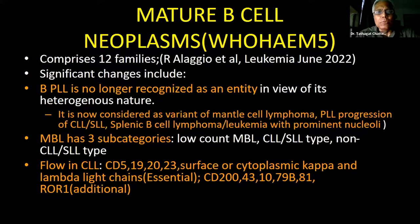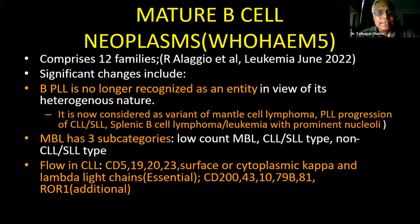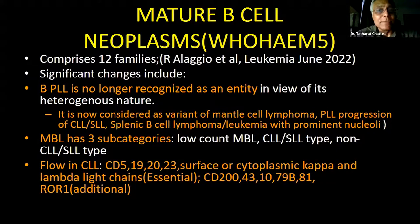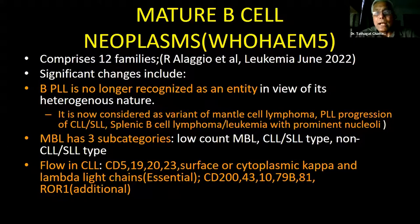Looking at what is coming in WHO Heme 5, the 2022 classification comprises 12 families. I am referring to the Alaggio et al. Leukemia June 2022 review articles. Significantly, there are many well-known Indian personalities in this classification — prominently my teacher Anita Borges, Sumit Kucheria, Vincent R. Rajkumar in plasma cell neoplasms, and Shaji Kumar — our world authority in myeloma. It is a proud moment for all of us to have so many Indians in this upcoming classification.